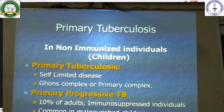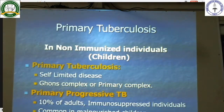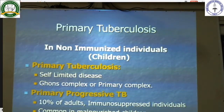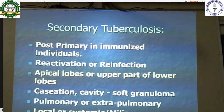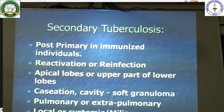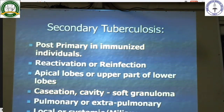Primary tuberculosis is usually a self-limited disease and can form a Ghon complex or primary complex. Primary progressive TB occurs in 10% of immunocompromised individuals — common in malnourished children — and causes miliary TB and meningitis. Secondary tuberculosis occurs in post-primary tuberculosis in sensitized individuals due to reactivation or reinfection. The apical lobes or upper parts of the lower lobes are involved. It can cause caseating or cavitary lesions called soft granuloma, occurring in pulmonary or extra-pulmonary sites, locally or as miliary disease.